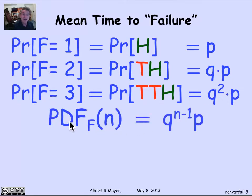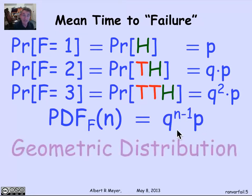And of course, the probability density function of F, the number of steps until you'd flip a head at N, the probability that you have to flip N times before you get the first head is Q to the N minus 1 P. By the way, a random variable whose probability density function is this value is called a geometric distribution. They come up all the time.